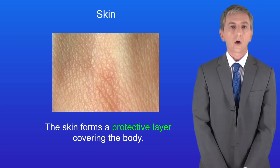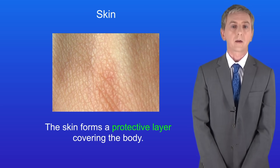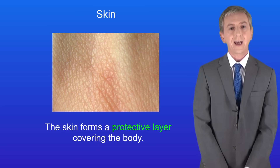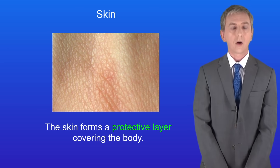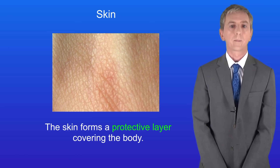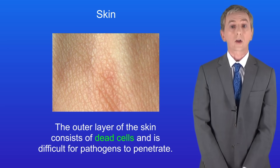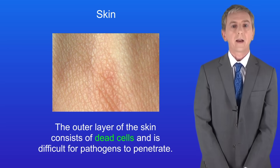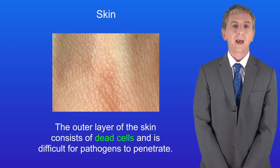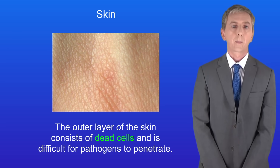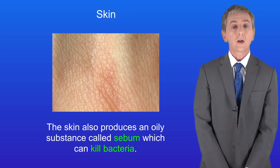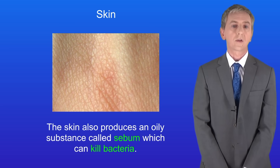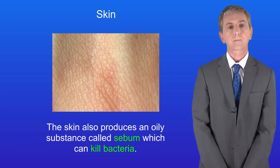The first part of the non-specific defence system is the skin. The skin forms a protective layer covering the body. The outer layer of the skin consists of dead cells, which is difficult for pathogens to penetrate. The skin also produces an oily substance called sebum which can kill bacteria.